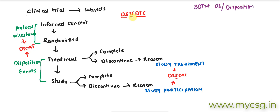Along with this, when a subject chooses to complete or discontinue and if the subject discontinues, there is a reason. We have a variable called DSTERM to store the reasons for discontinuation. Sometimes the collected reasons are not in standard format and we may want to convert them into standard notation. So we have a variable called DSDECODE to store the collected values after converting them into standard notation using controlled terminology.